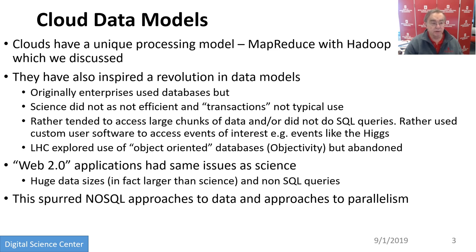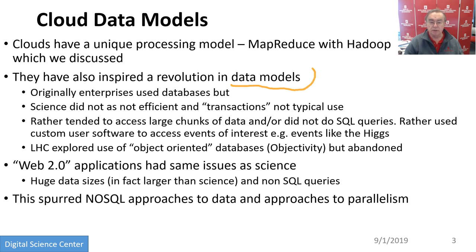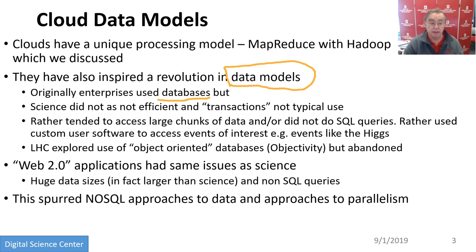We've already talked about MapReduce for Hadoop. That's a unique processing model. The revolution of clouds is not just the way infrastructure is made available — it's also the wonderful software, which is strikingly better than the previous generation. Another area where clouds differ from previous approaches is in the data model. Looking back just a few years, everything was straightforward: enterprises used databases, and Oracle made a fortune — and still does, because enterprises have not changed their old way of doing things. They have added new ways which do not necessarily use databases.